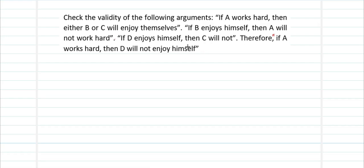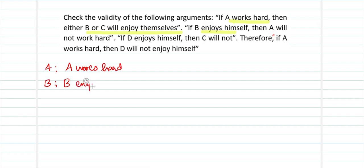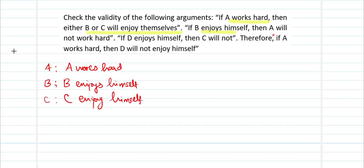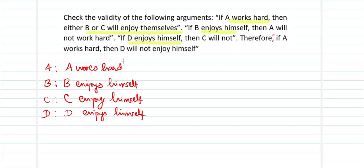We need to first convert these statements as propositions. Let A be the proposition that A works hard, let B be the proposition that B enjoys himself, let C be the proposition that C enjoys himself, and let D be the proposition that D enjoys himself. So there are four fellows — A, B, C, and D — where just A alone works and B, C, and D enjoy themselves.